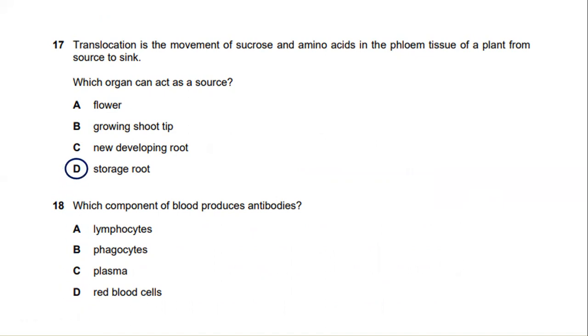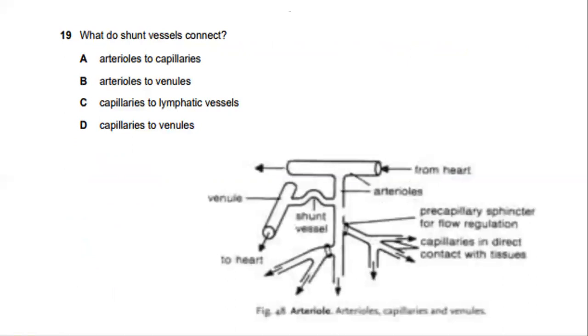Which component of blood produces antibodies? The component of blood responsible for producing antibodies is lymphocyte. The answer is A, lymphocyte, one of the main types of immune cells, which is divided into B and T cells. B lymphocyte produces antibodies, which are proteins gamma globulins.